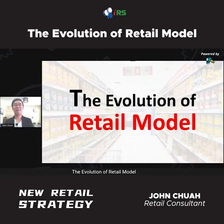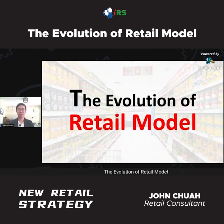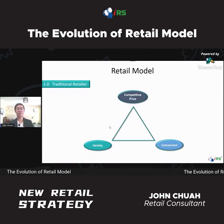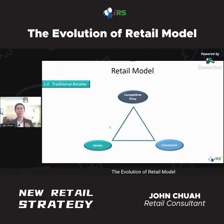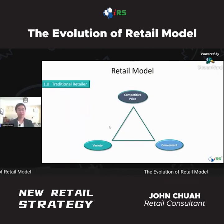Before we talk about the transformation, let's talk about the evolution of the retail model. We actually have four evolutions. The first one is the traditional retail model 1.0, with three criteria: competitive price, varieties, and convenience.